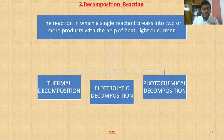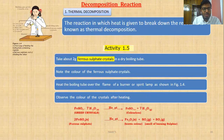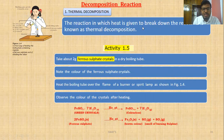So these are the three methods we are going to discuss in decomposition reaction. Let's go into the first one: thermal decomposition. In this, we are using heat energy to decompose. The reaction in which heat is given to break down the reactant is known as thermal decomposition — we use heat to break down the reactants to form two or more products.